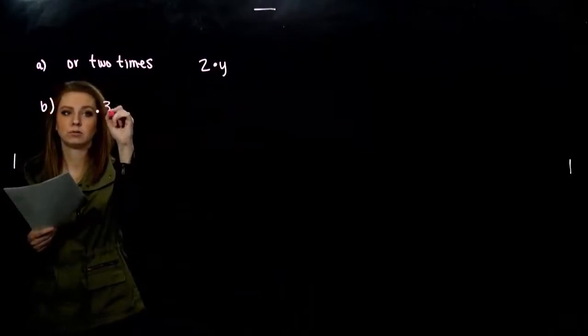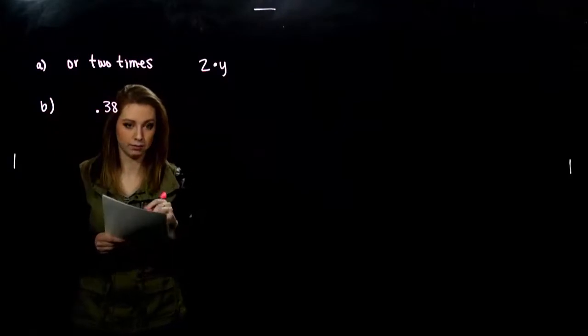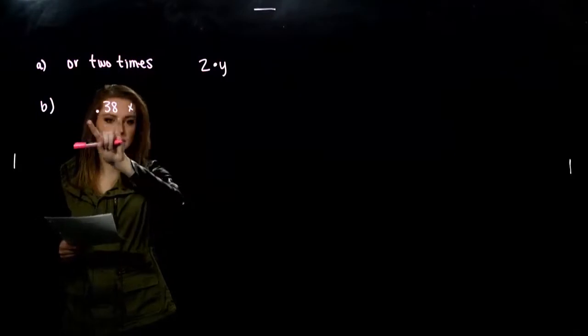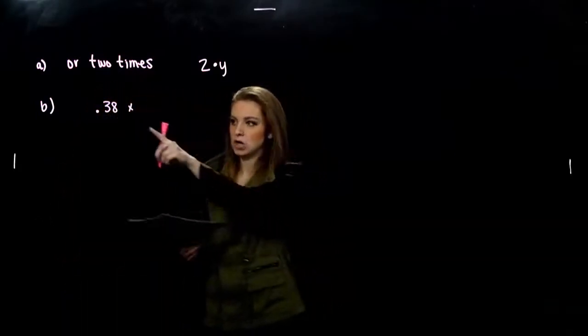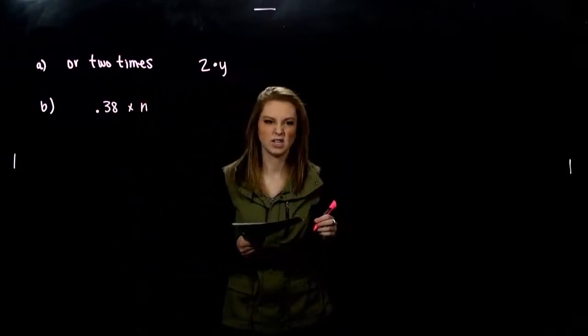Point 38. 38% of. Of always means multiplication. And I'm going to put a little x so I don't get confused with decimals and multiplication. 38% of some number, some unknown. Let's call it a different variable.